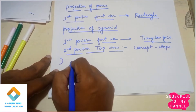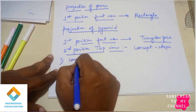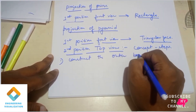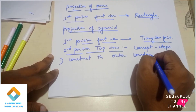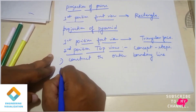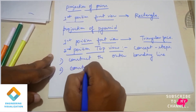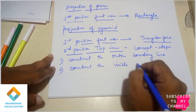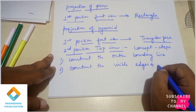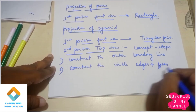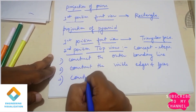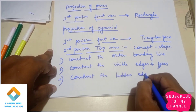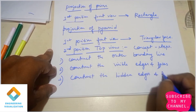Visualize the top view. The steps are: first, construction of the outer boundary line — the outer boundary line is first to draw. Remember, the second top view for prism and pyramid is the same concept. The second step is to construct the visible edges and faces. The third step is to construct the hidden edges and faces — the invisible edges and faces shown as dashed lines.